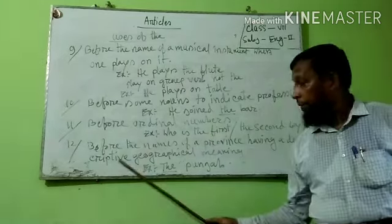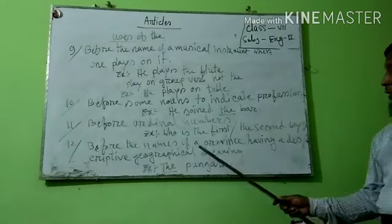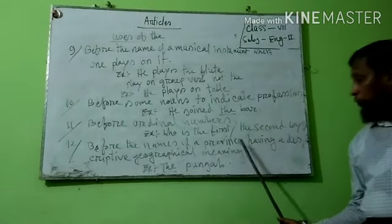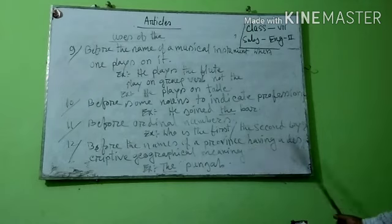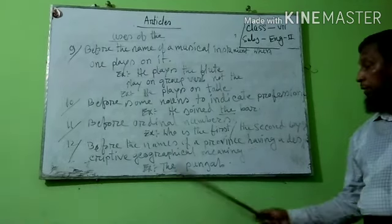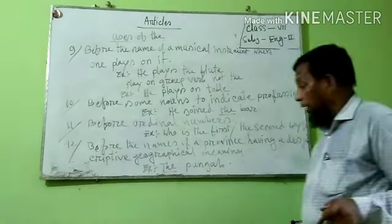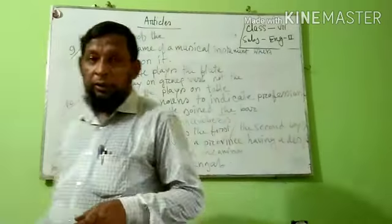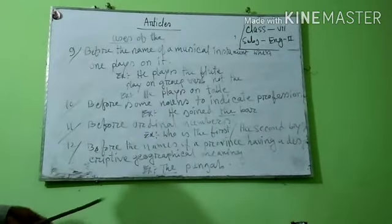Number eleven: before ordinal numbers. Example: Who is the first boy, the second boy, or the third boy? That means ordinal number — the third boy. This is the definite article. Number twelve: before the name of a province having a descriptive geographical meaning. Example: The Bengal.